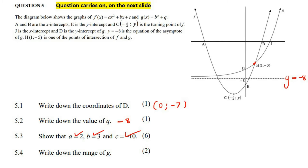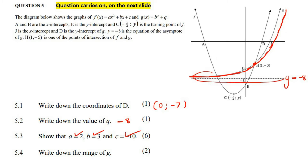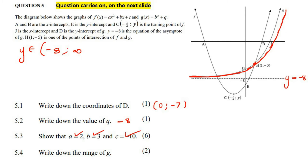Write down the range of g, which is the exponential. The lowest value for g is the asymptote at minus 8 — remember, range is always y values. The highest value is infinity. So you can say y is an element from minus 8 (with a round bracket, since it doesn't touch) up to infinity, or simply y is bigger than minus 8.